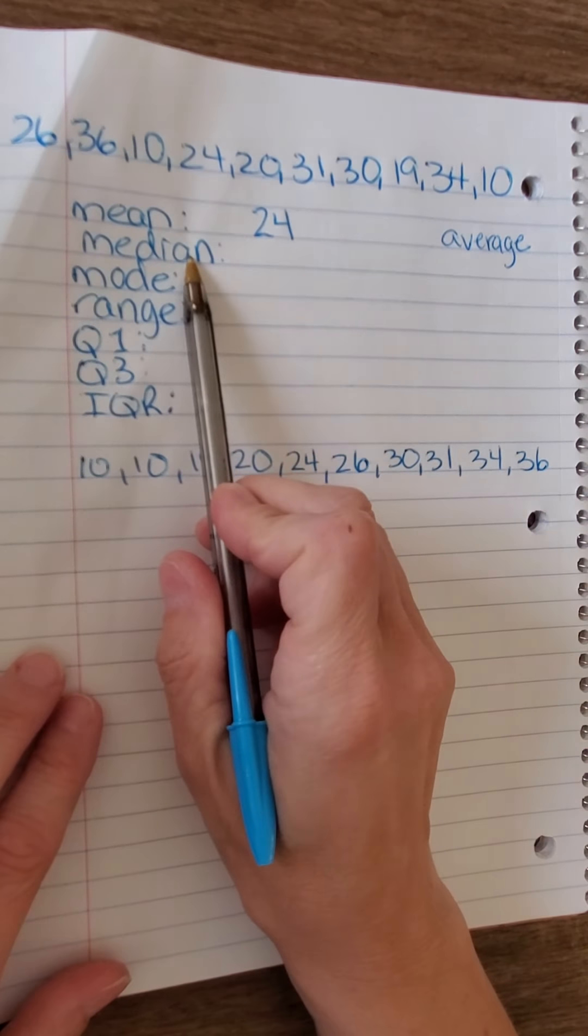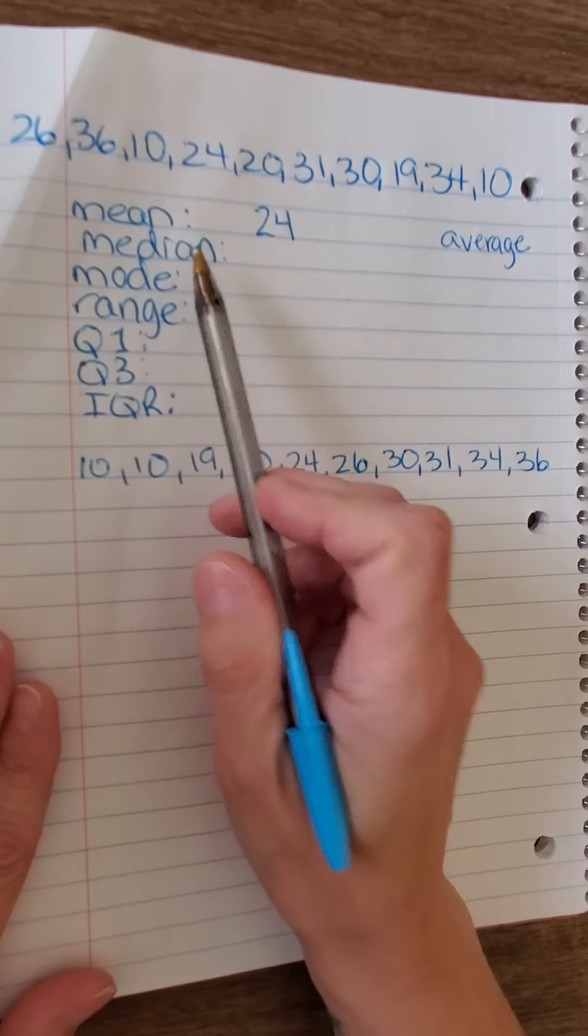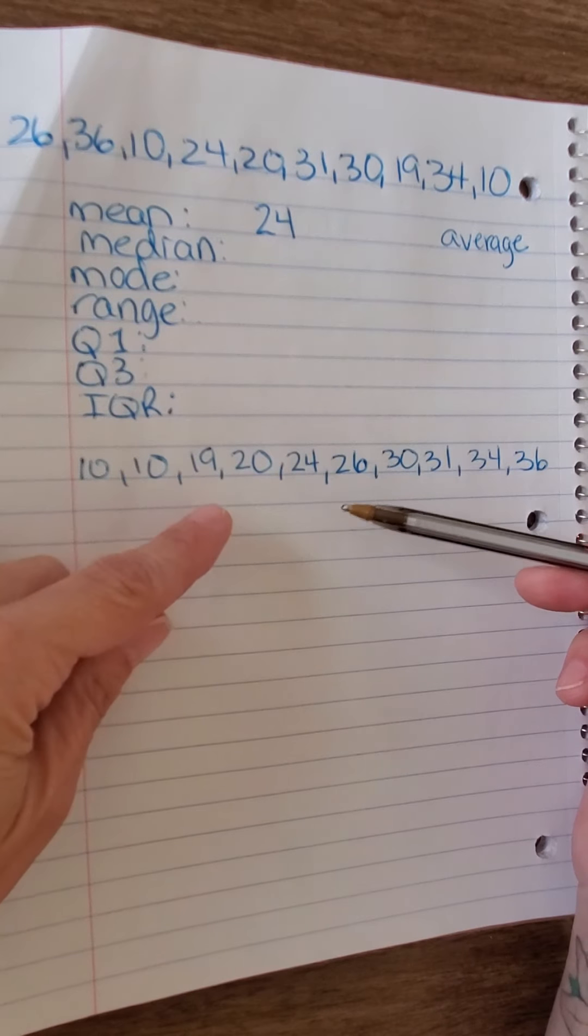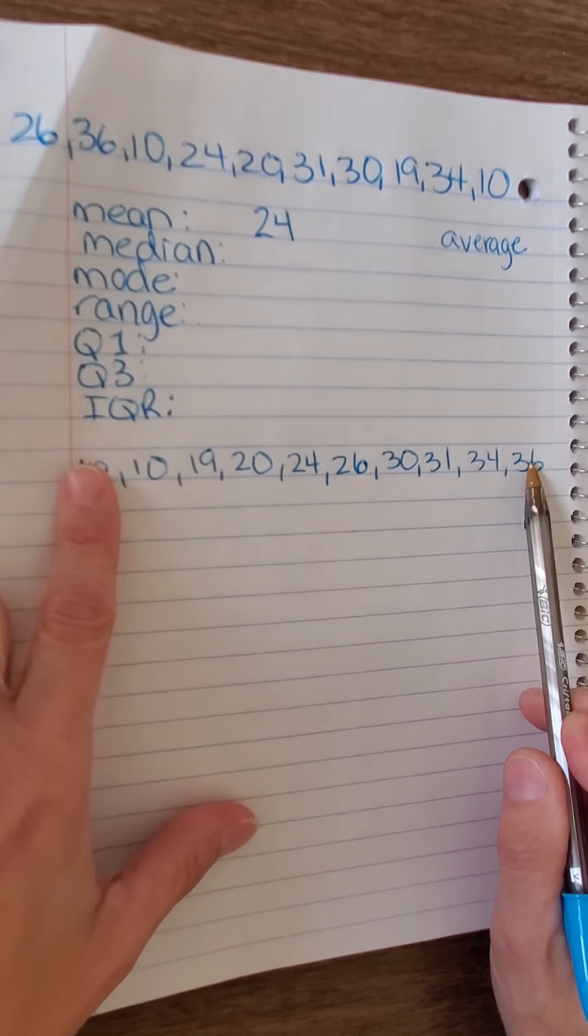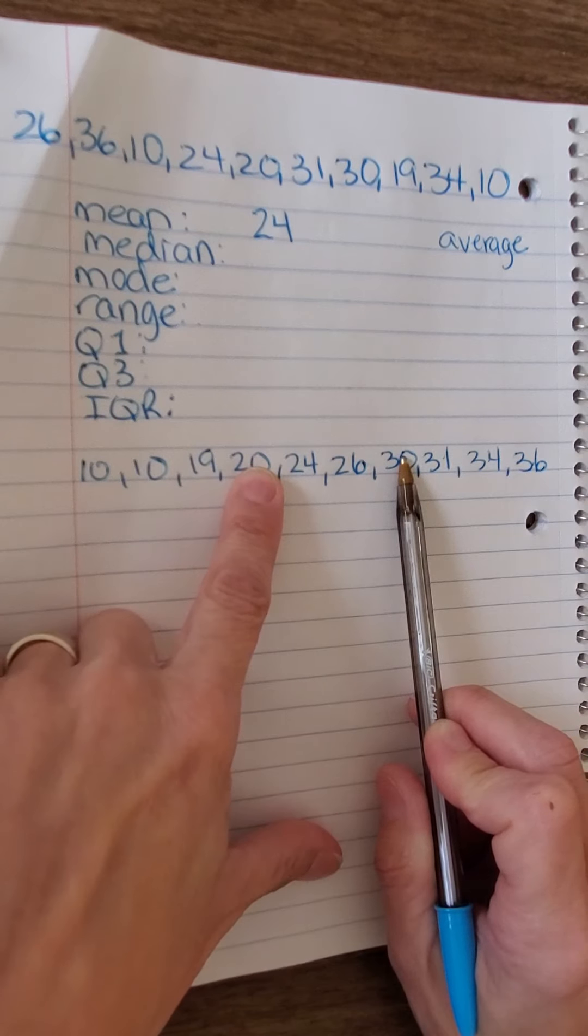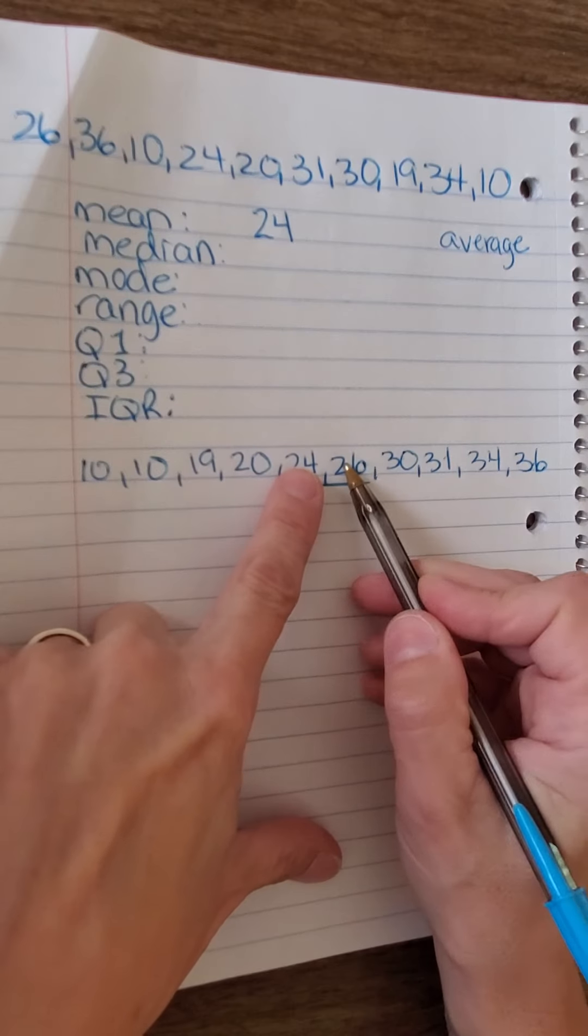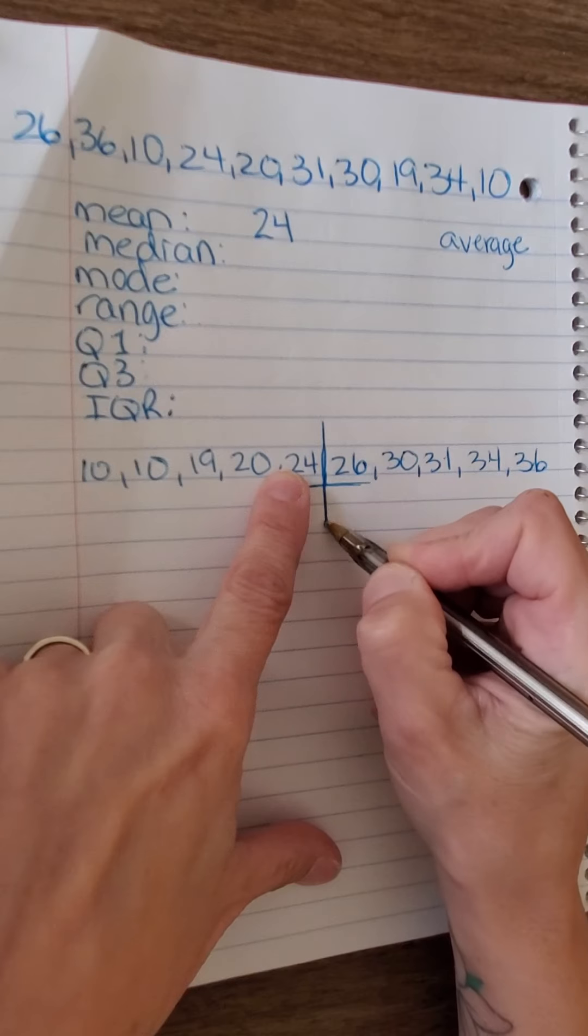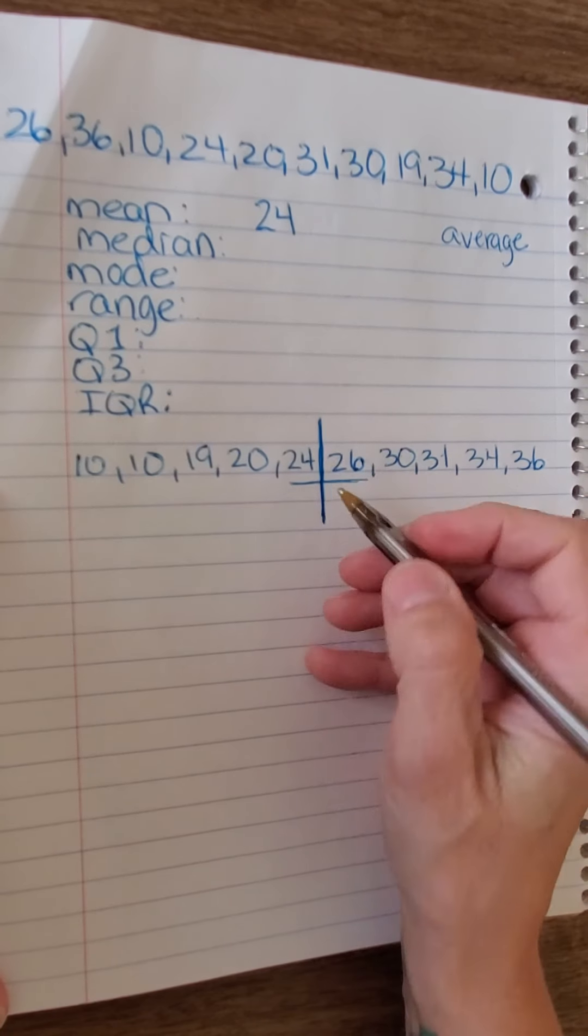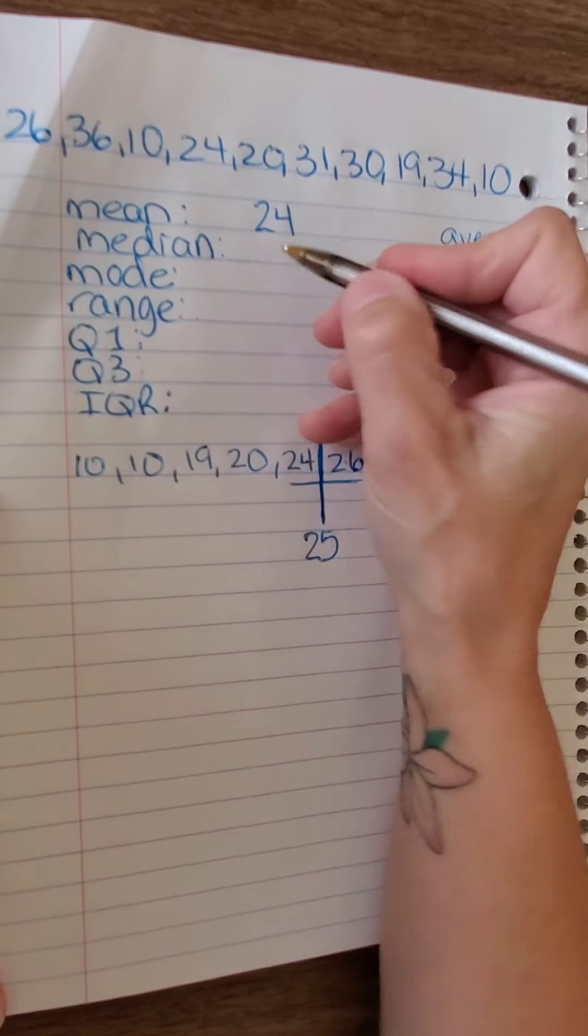Now, the median is the number that's exactly in the middle of the set of data. We use this by kind of knocking a number off the high end and a number off the low end and working our way in toward the middle. So, if I take the high end and the low end, 1, 2, 3, 4, and now I have two numbers left here. I have 24 and 26. So, to find out what the median is, what's the number exactly in the center, I'm going to have to figure out what comes in between 24 and 26. So, in this case, 25 comes in between 24 and 26. So, this is my median.